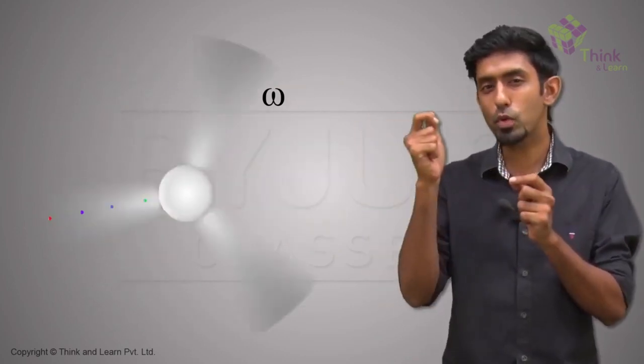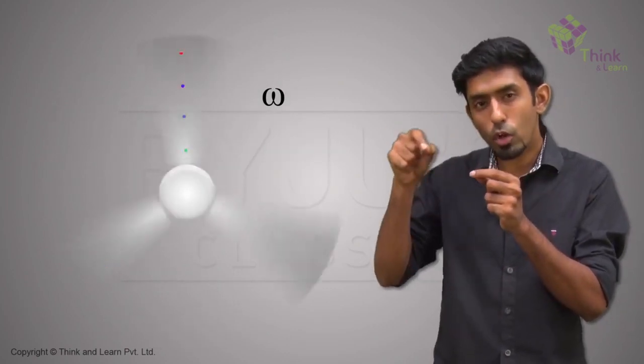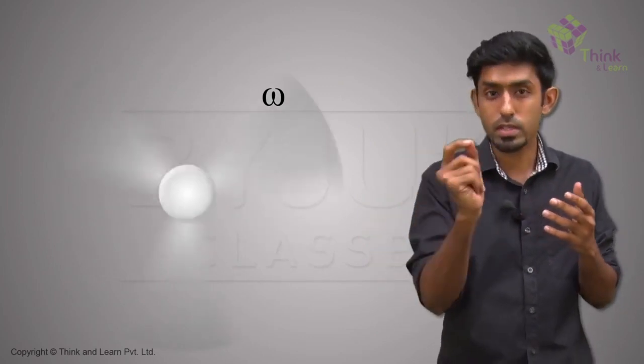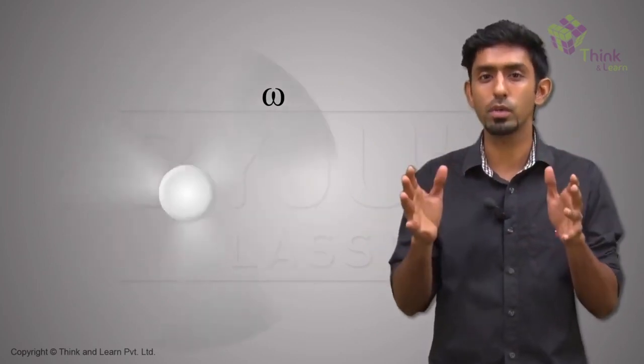So at that time, not only is the omega for all the points common, the omega itself with time is not changing anymore. Till then it was increasing, and after that it reaches a constant value.